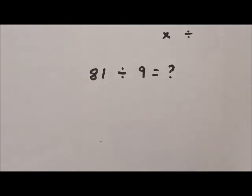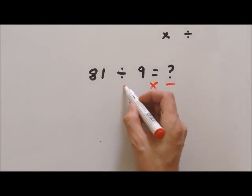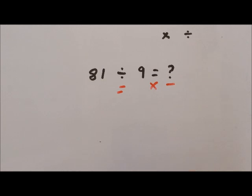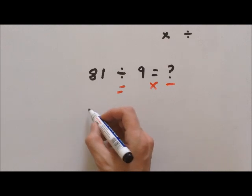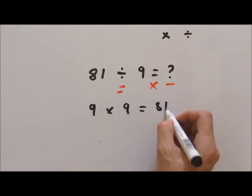I actually like to think of it as something times nine equals 81. And if you know your times tables, it's nine times nine equals 81.